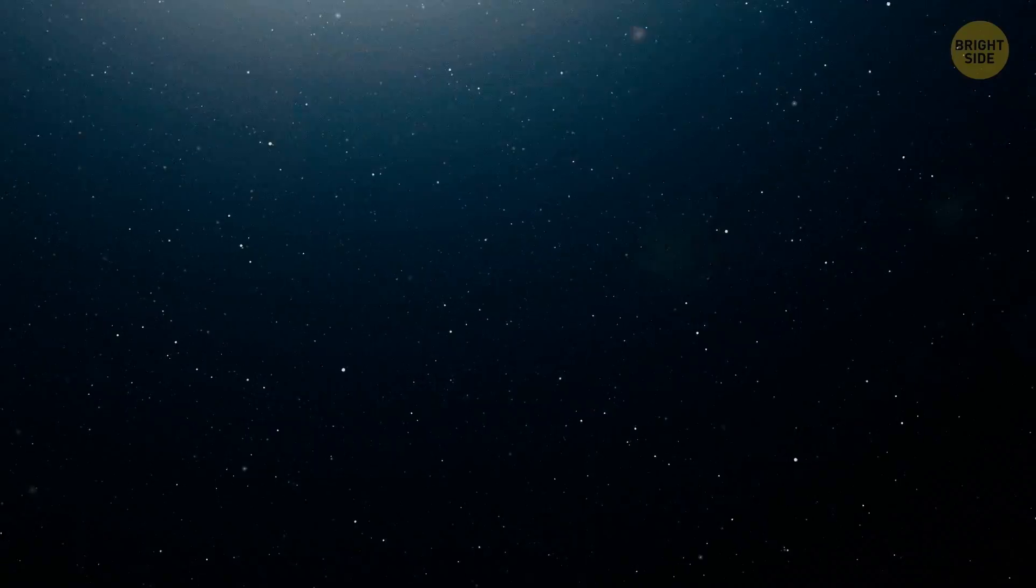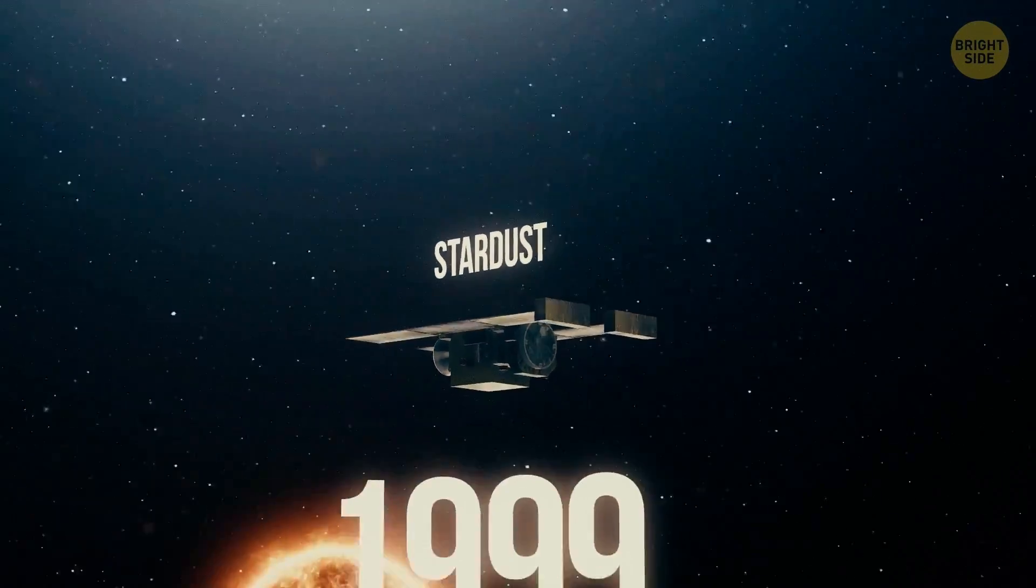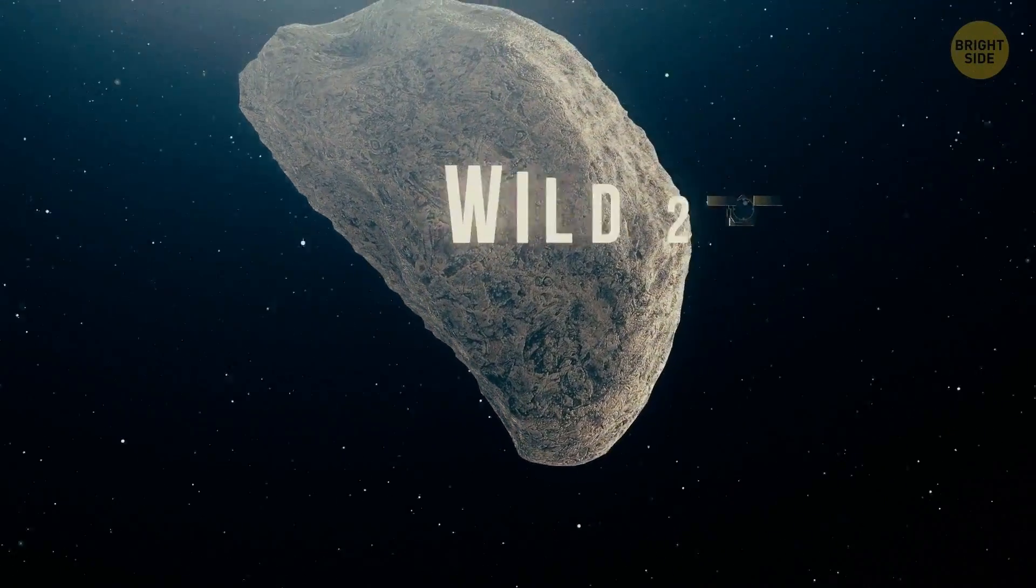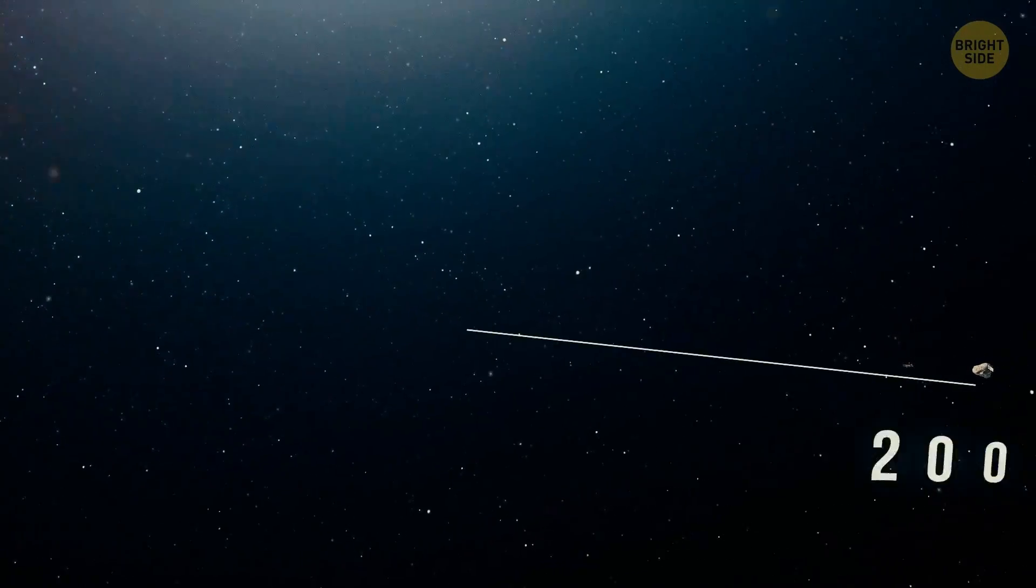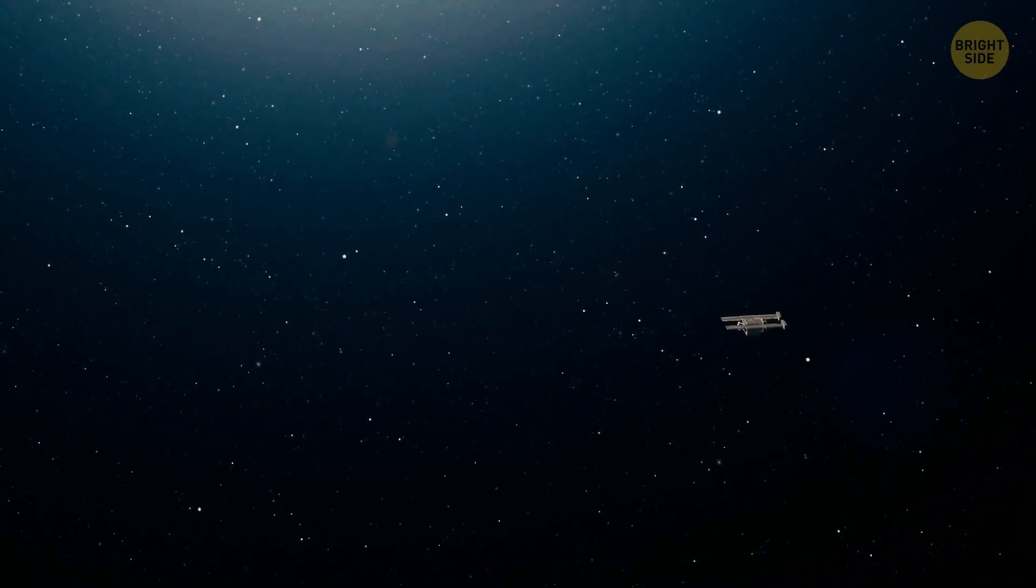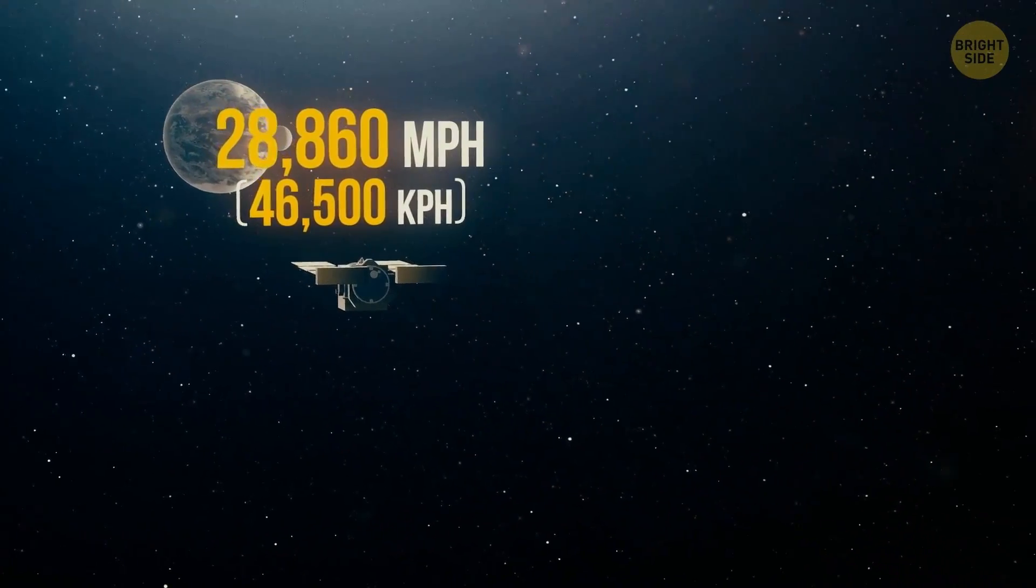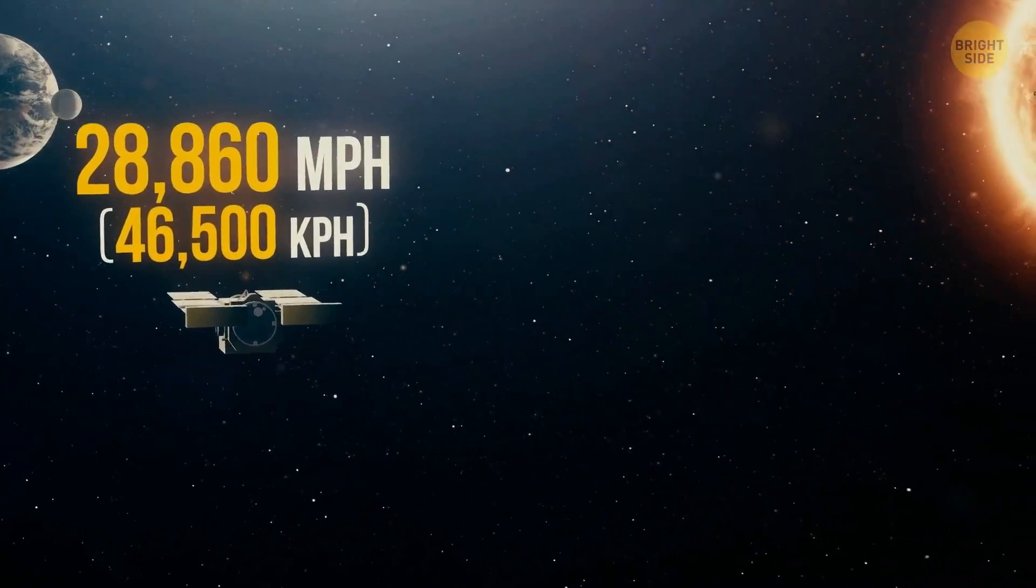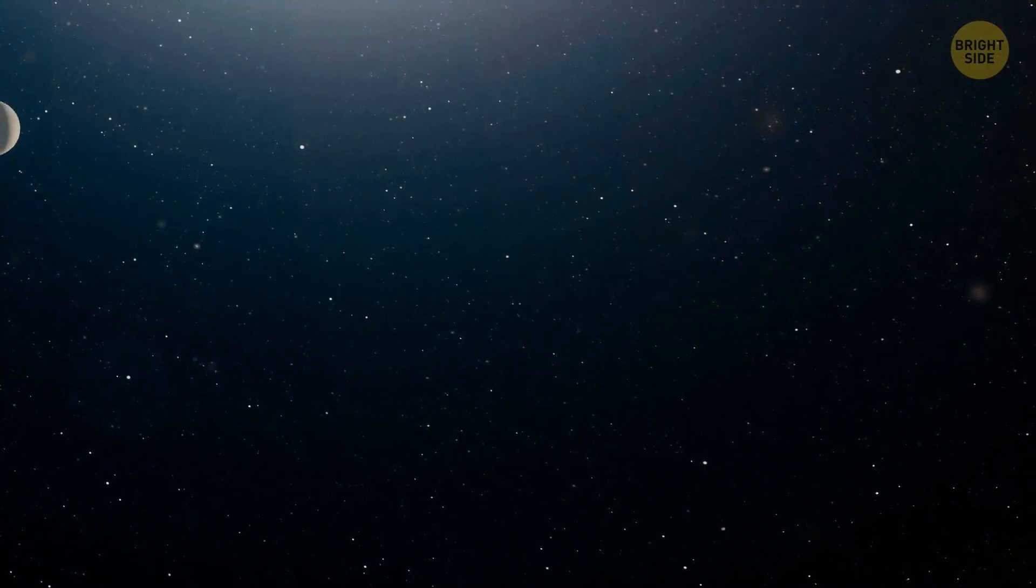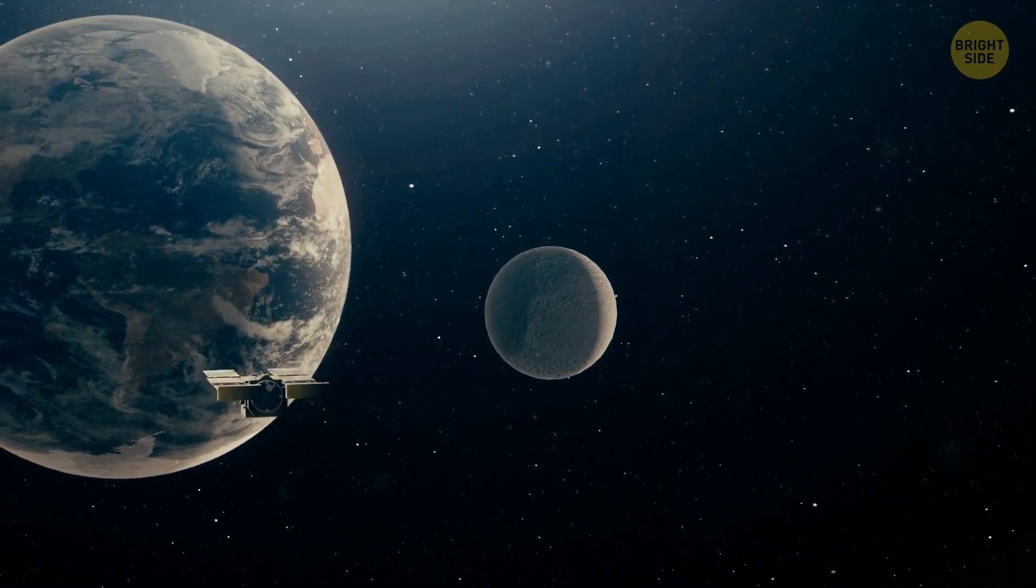In sixth place, far in outer space, the Stardust space probe flies. In 1999, NASA sent this probe to collect samples from the comet Wild 2, and it brought these samples to Earth already in 2006. In space, it developed its maximum speed of 28,860 miles per hour. Seven years is not so bad for a delivery service, given that the probe flew 2.8 billion miles. It's like a round trip from the Earth to the Sun 14 times.